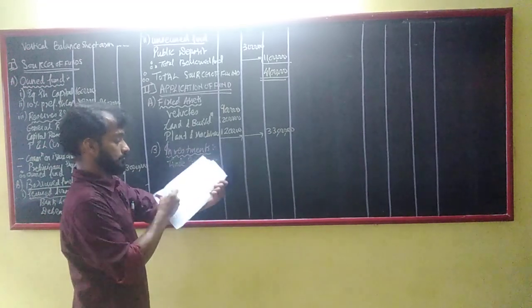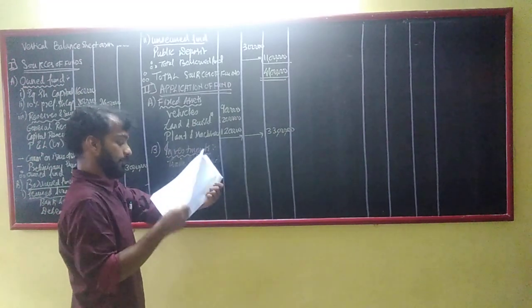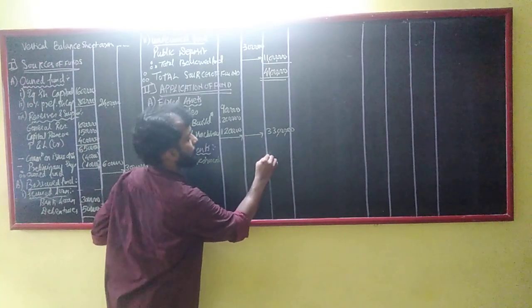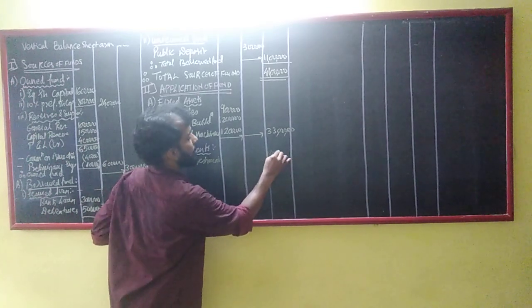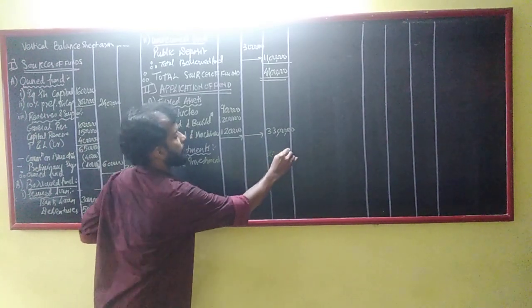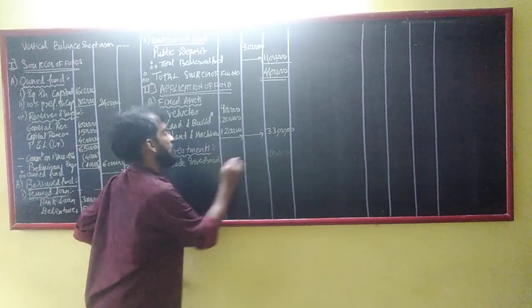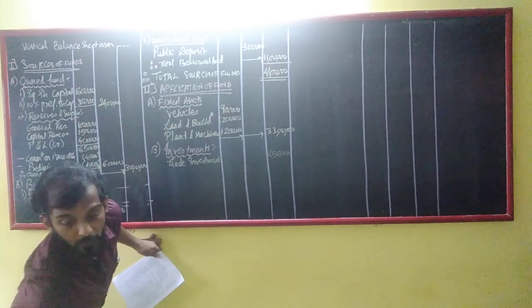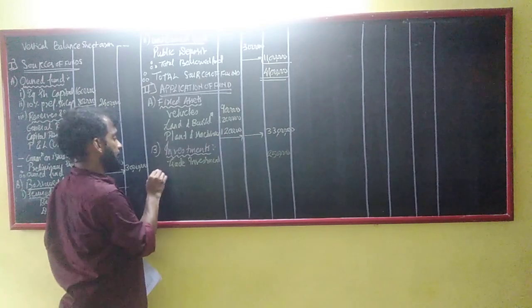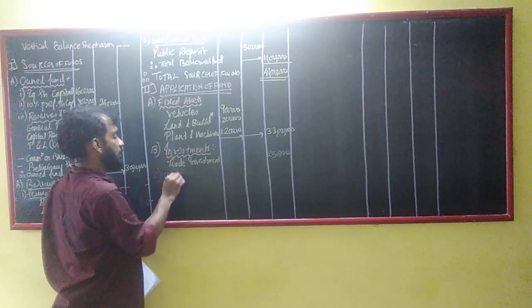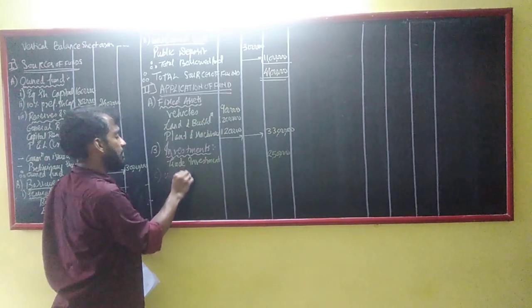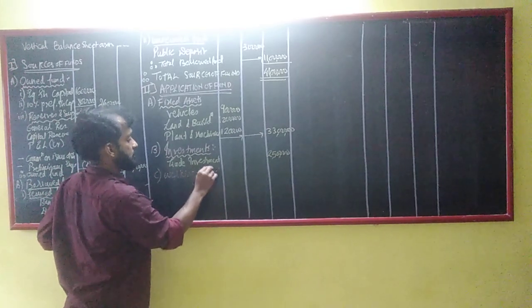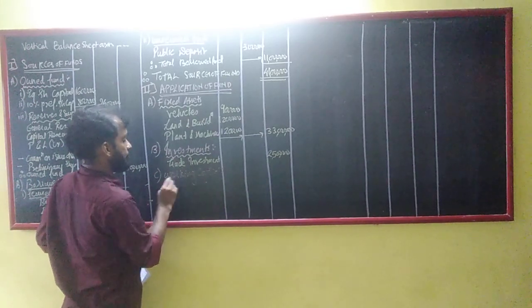You are going to teach this. Two items here. Then heading number C — working capital. Working capital ka formula: current assets minus current liabilities. Working capital underlined.